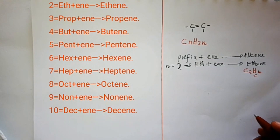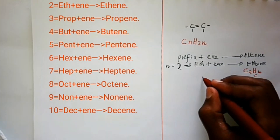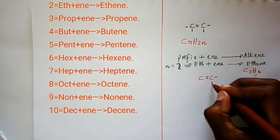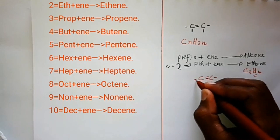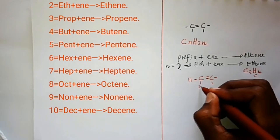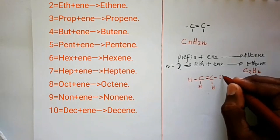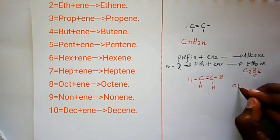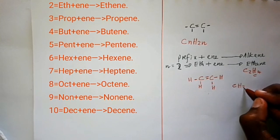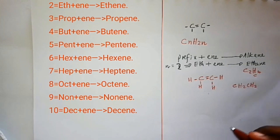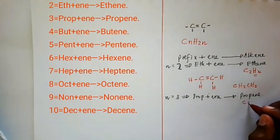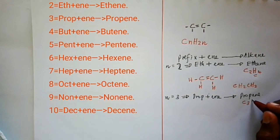To draw the open structure of ethene, you draw two carbon atoms with a double bond between them, then complete the bonding for carbon: hydrogen, hydrogen on one side and hydrogen, hydrogen on the other. When condensed, the structure is CH2=CH2. For propene, 'prop' means three carbon atoms, so the number of hydrogens is 2×3 = 6.